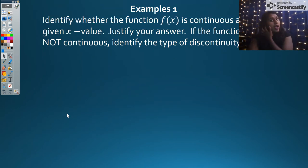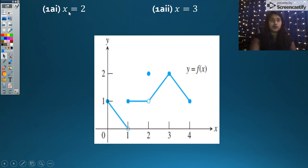So here's my first example. For these examples, what I want you to do is identify at that x point whether it's continuous. And if it's not continuous, what kind of discontinuity? So here's that first one. We're looking at x equals 2 and x equals 3. Take a moment, pause, and figure out what do you think those answers are going to be.